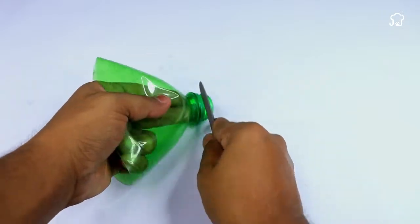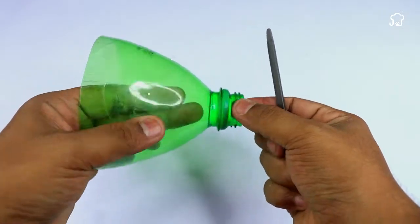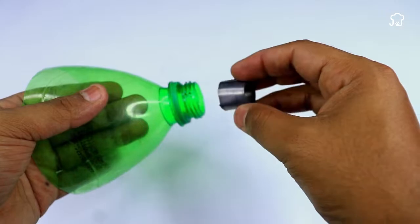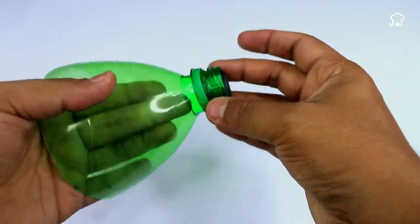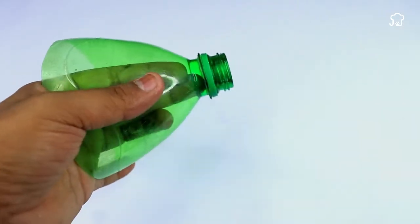Once you have sanded the nozzle, insert a small metal tube into it. This tube will act as a sound conductor, improving the quality of the audio produced by your homemade speaker.